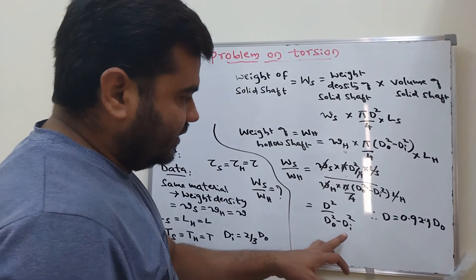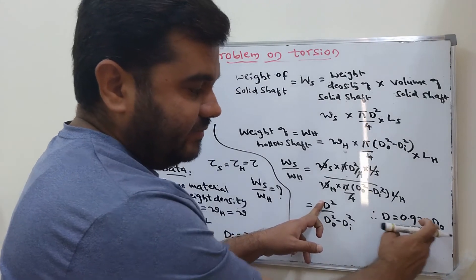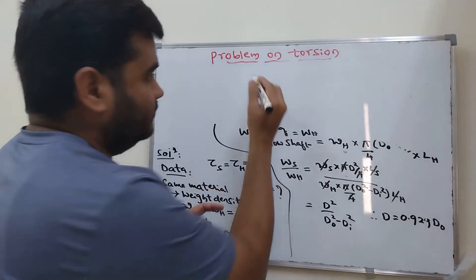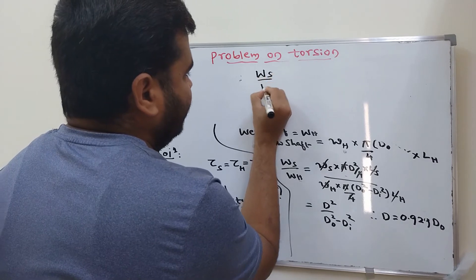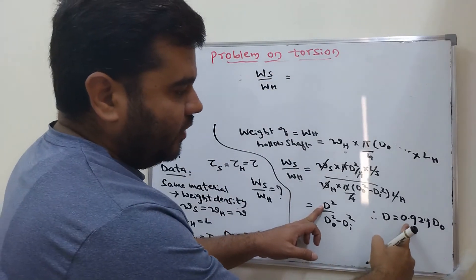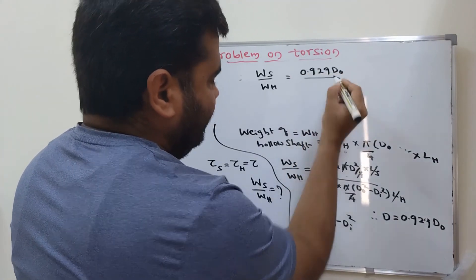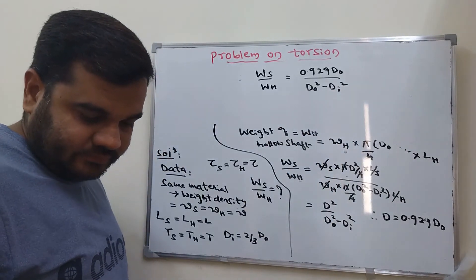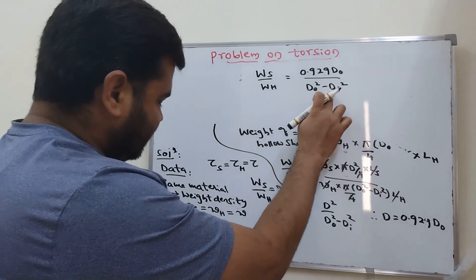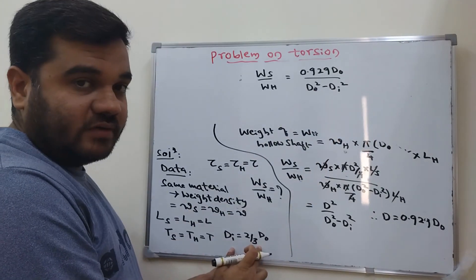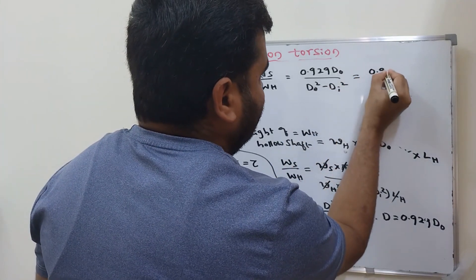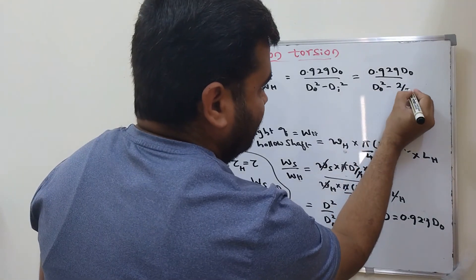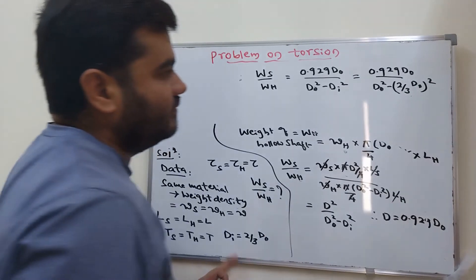Substituting d = 0.929 D_o and D_i = (2/3)D_o: the ratio becomes (0.929 D_o)² divided by (D_o² − ((2/3)D_o)²). This gives 0.929² × D_o² divided by (D_o² − (4/9)D_o²). D_o² cancels from numerator and denominator.